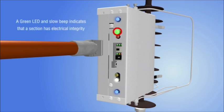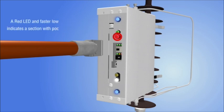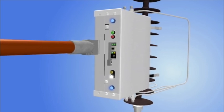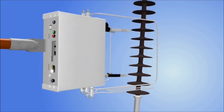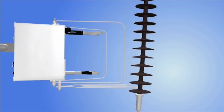A green LED and slow beep indicates that a section has electrical integrity. A red LED and faster, lower frequency tone indicates a section with poor electrical integrity. When the V-probes are disengaged from the sheath section, the polymer insulator tester stops reporting whether the section tested has passed or failed.